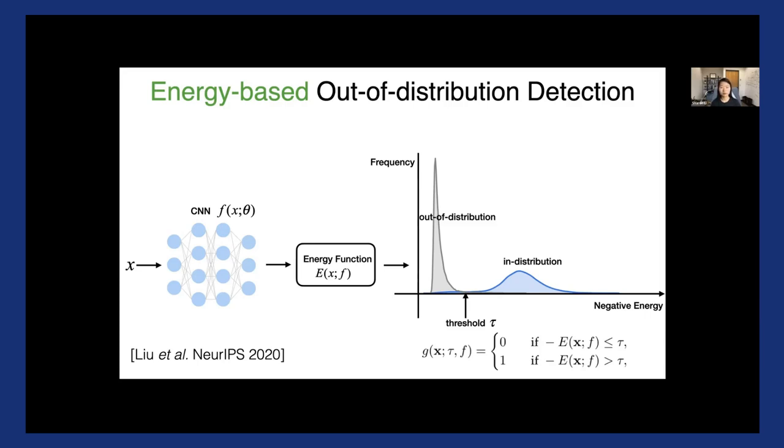And once we have the energy score, we perform this threshold in comparison. If it's smaller than this threshold tau, we're going to reject this input. And here we flip the sign. This x-axis is based on a negative energy, just to align with the convention that larger score indicates in distribution and vice versa.